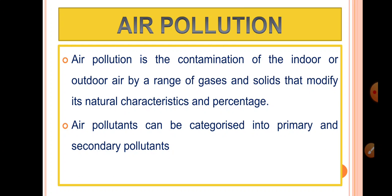If you look at the natural characteristics of the air — any change in those natural characteristics is what we call pollution. In the air, nitrogen is 78.09% and oxygen is 20.95%. If those proportions change, we have air pollution.